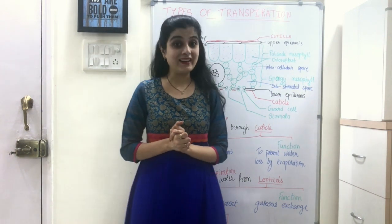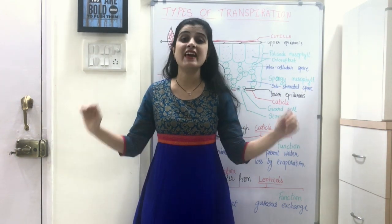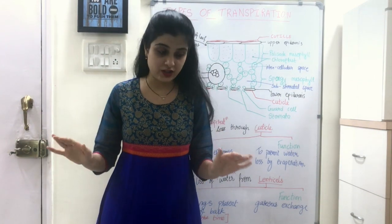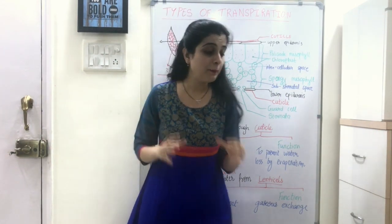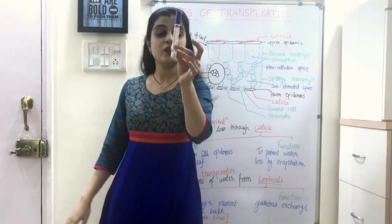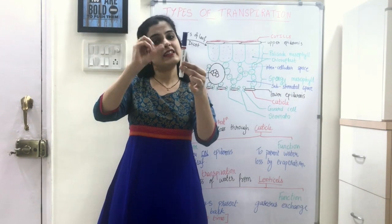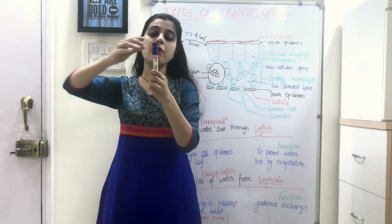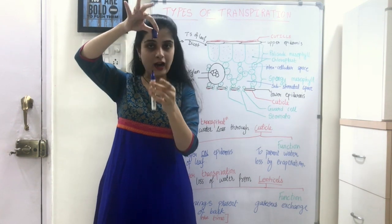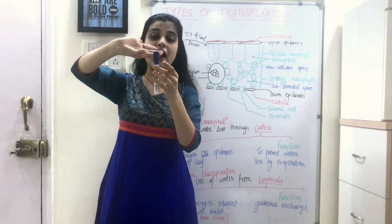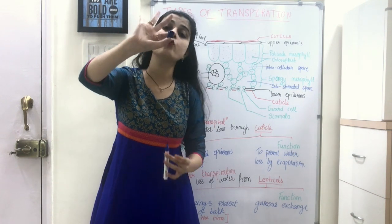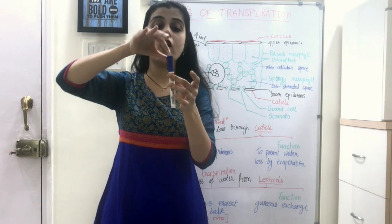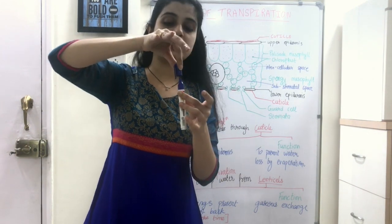What do I mean by the term TS? TS stands for transverse section. If this is a stem and I want to take its transverse section, I am going to cut the stem horizontally, and then have a bird's eye view from the top. This section is called a transverse section. Similarly, if I want to take the transverse section of a leaf, I cut the leaf horizontally and then view it from the top.